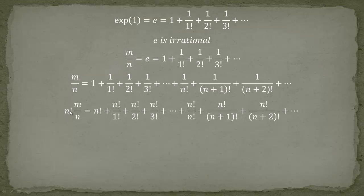Recall that n factorial means multiplying all natural numbers from 1 to n — for example, 5 factorial is 1 × 2 × 3 × 4 × 5. So dividing n factorial by n gives the product of all natural numbers up to n minus 1. On the right-hand side we get: n factorial over 1 factorial, n factorial over 2 factorial, n factorial over 3 factorial, and so forth, then n factorial over n factorial, followed by n factorial over n plus 1 factorial, n factorial over n plus 2 factorial, and so on.